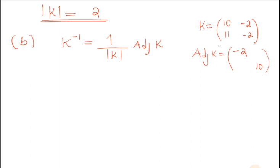While the minor diagonal elements you change the sign. This is positive becomes negative and that is negative becomes positive. Then you come and replace it. 1 over what? |K| is 2. We have (-2, 2; -11, 10).